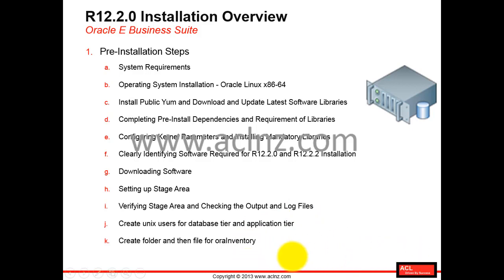The next step is creating the Unix users. You can install Oracle EBS 12.2.2 using one user — called an express installation, which is faster and good for novice users — or you can separate it into two users: one for the database tier and one for the application tier, which is the standard installation used in corporate environments. We will use the standard installation.